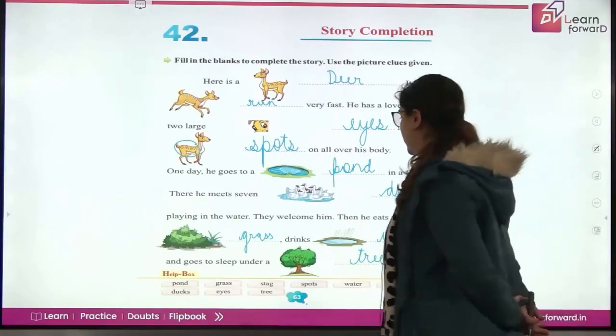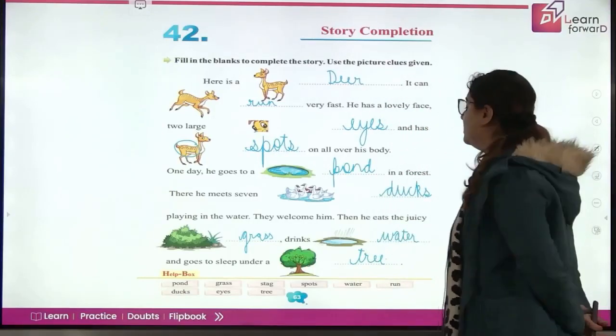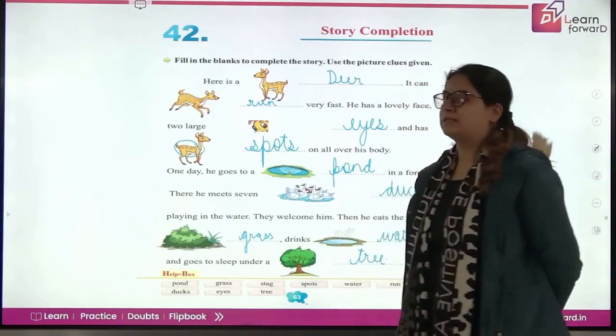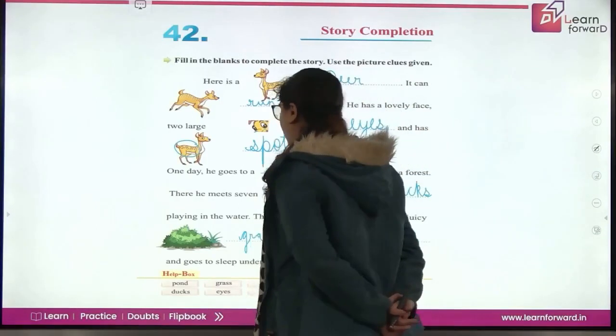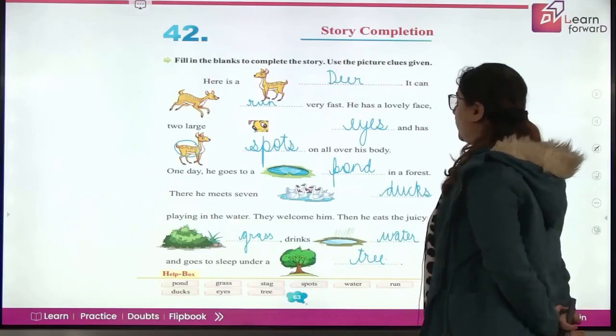There he meets seven dash. What did it meet there? What did it meet? Ducks. How many were there? Seven. And what were they doing? Playing in the water. They were playing in the water.